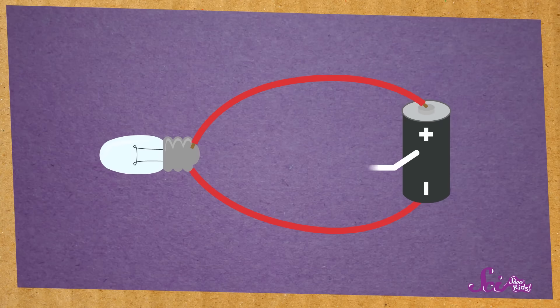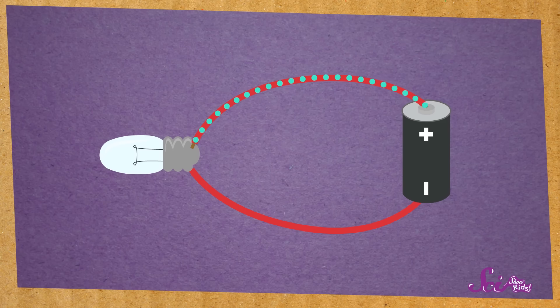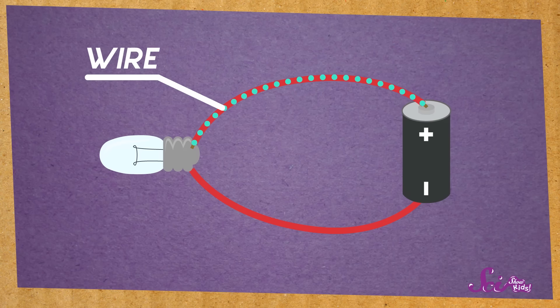The battery is what we call the power source. That is, it's where the electricity comes from in this circuit. Electricity flows from the power source on the path of the circuit. And a lot of the time, that path is made by some kind of a wire.